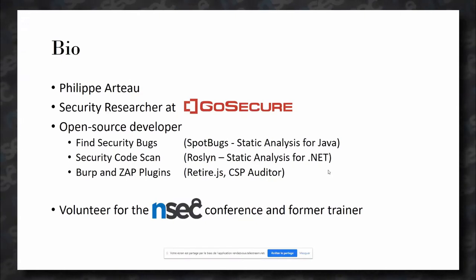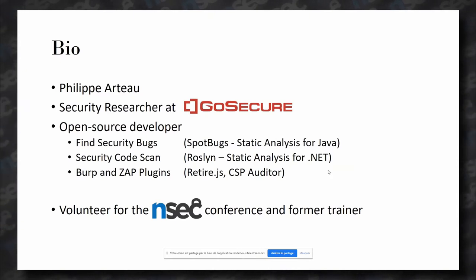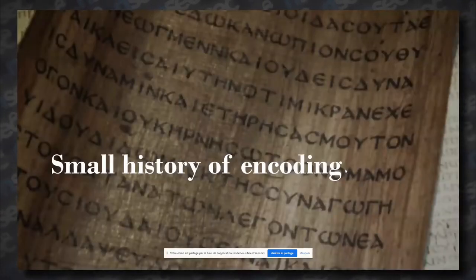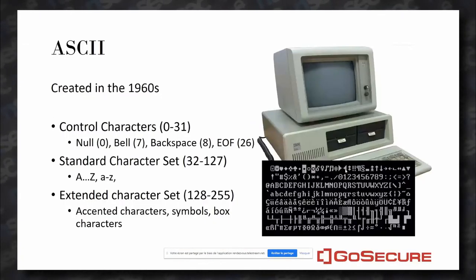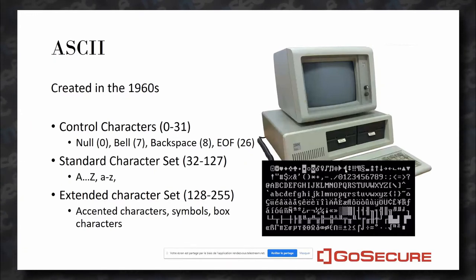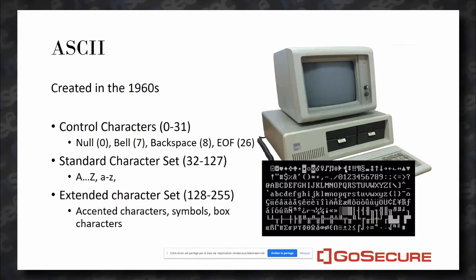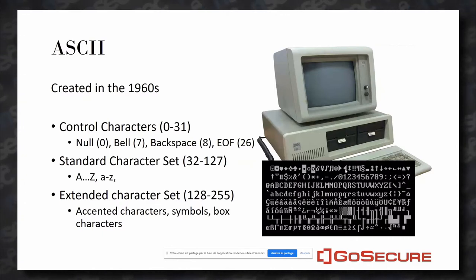I'm working for GoSecure as a security researcher in application security. I'm also a volunteer at NorthSec, often doing CTF changes depending on the year, and helping with the NorthSec website. Before we start, I'm going to go through a basic introduction to encoding. One of the early encodings was ASCII, which emerged in the early 1960s. The way ASCII worked was pretty simple: every byte was one character. Think about a text file or a message that you need to send.